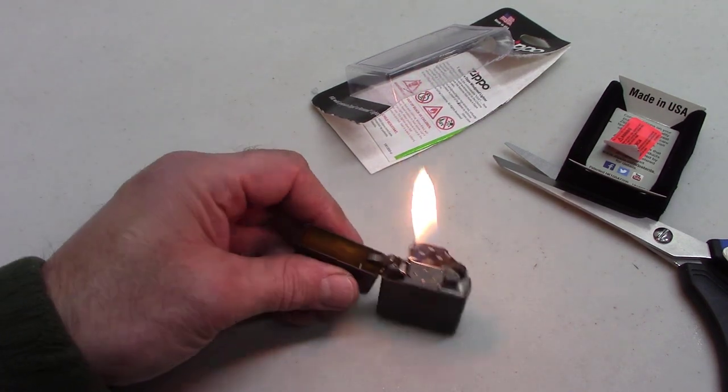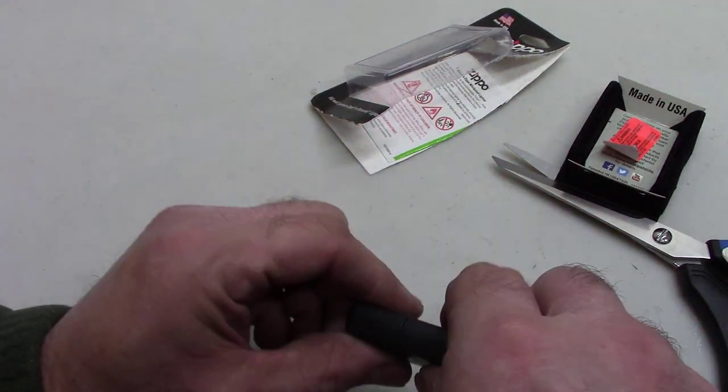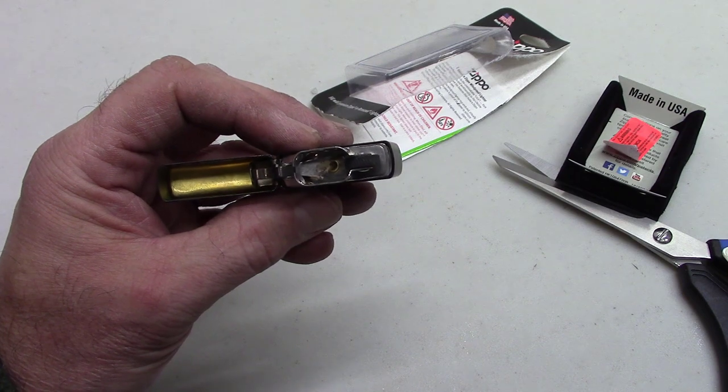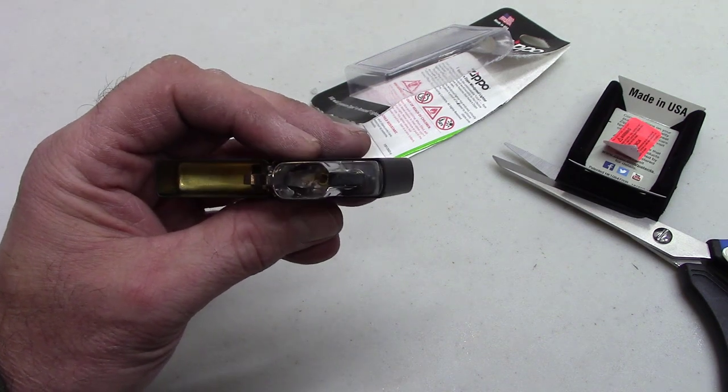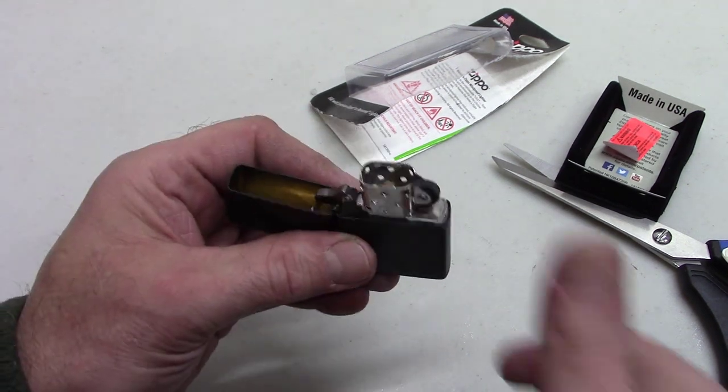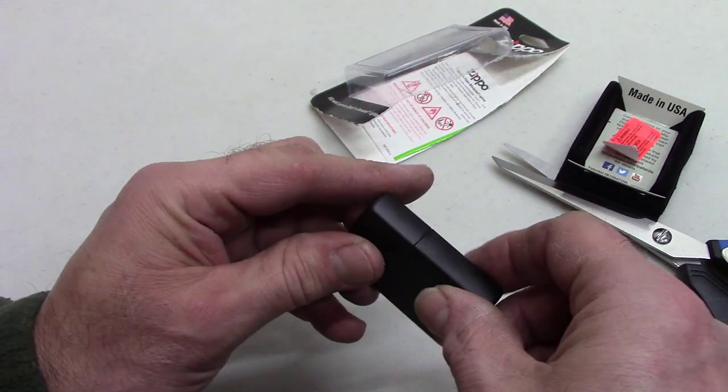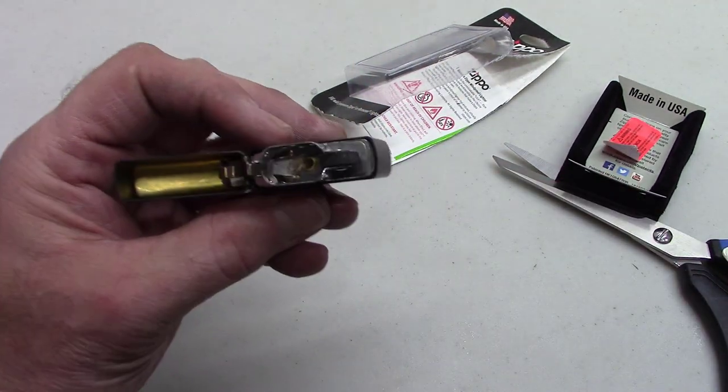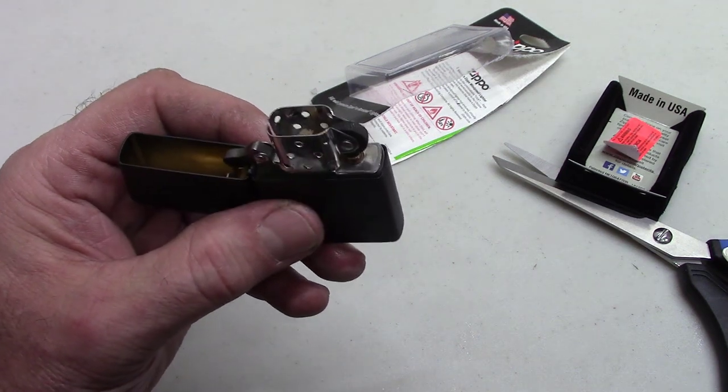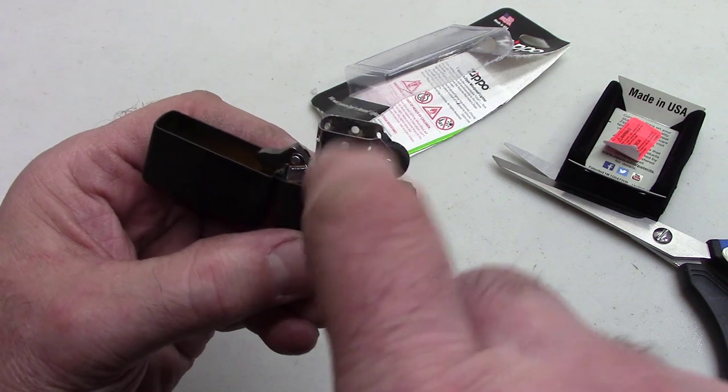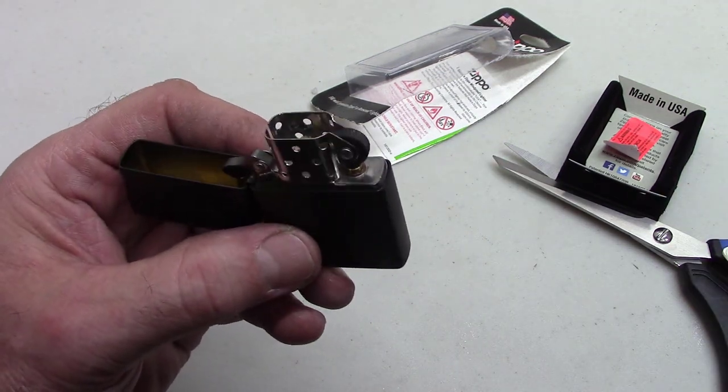I think once that wick burns up a little bit that flame won't be so high. It's starting to get hot. So that's a pretty good wick length there, it's about halfway up the vents here, halfway maybe a little bit more.